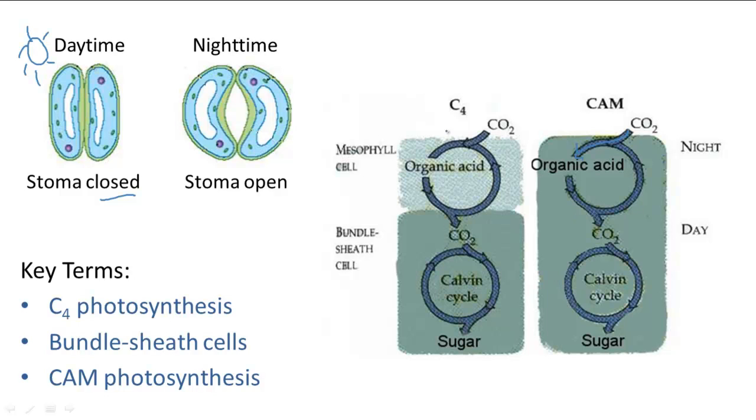So at night the CO2 will enter in, convert into organic acid, store itself overnight, and then during the day convert back into CO2 for the Calvin cycle to use when there is light.